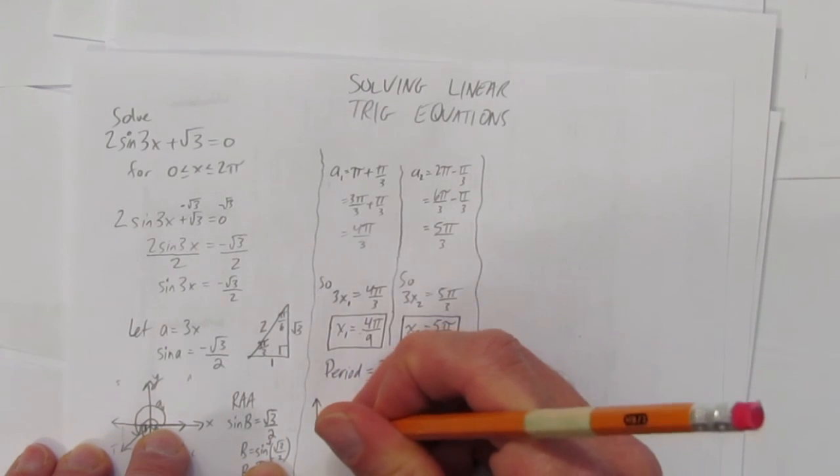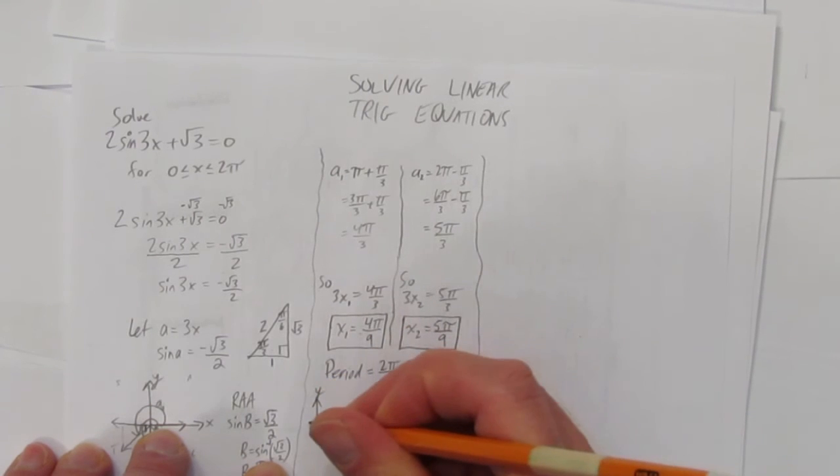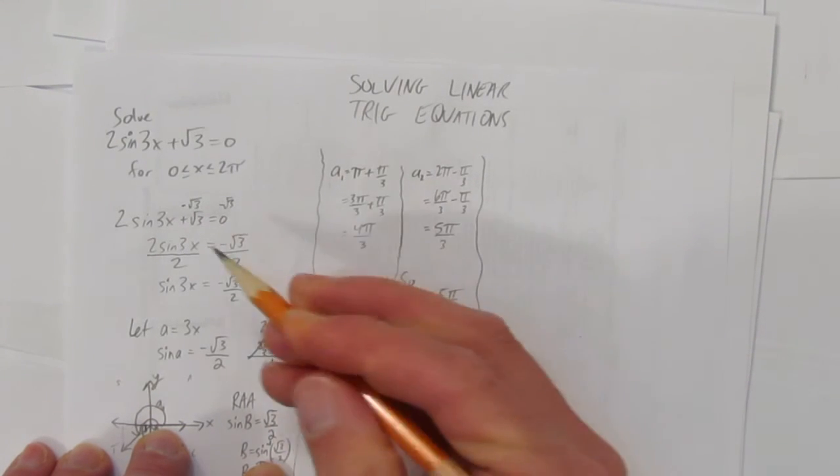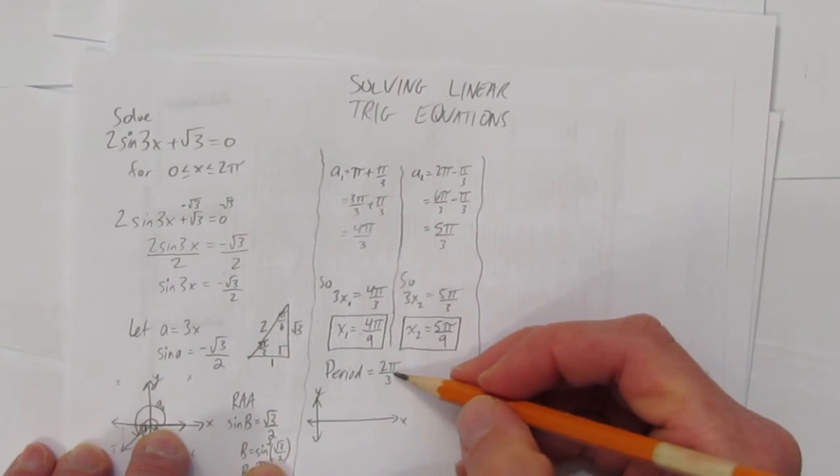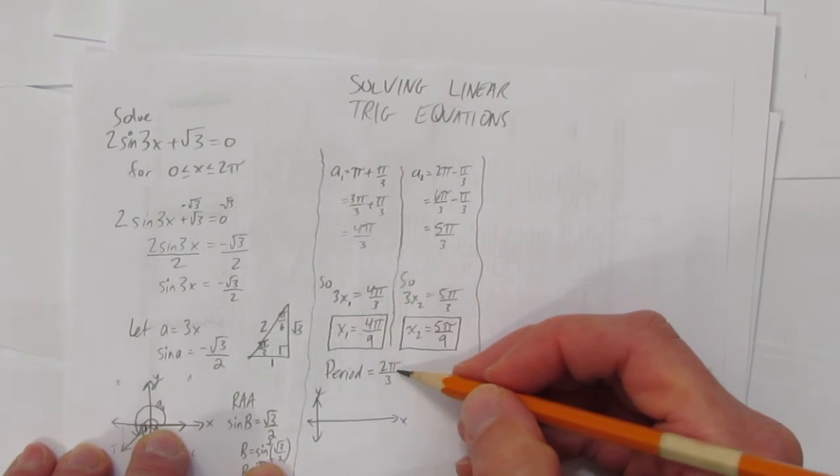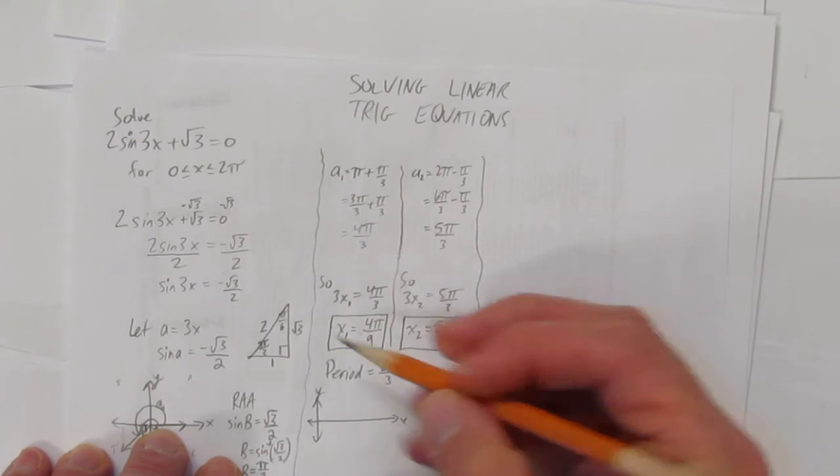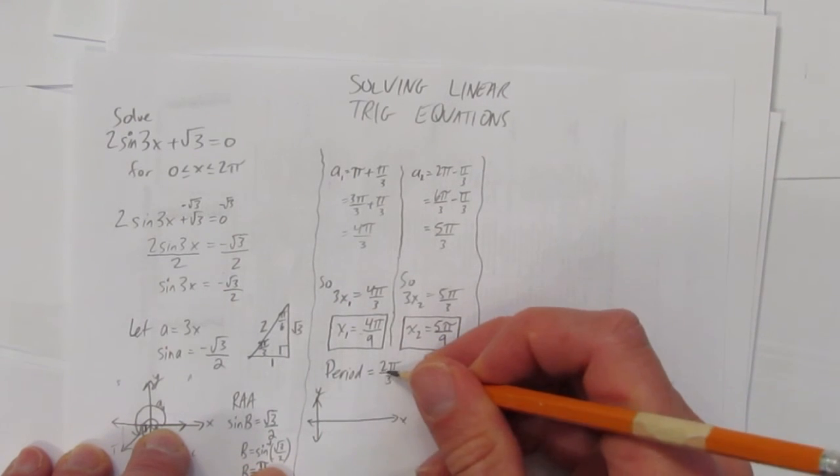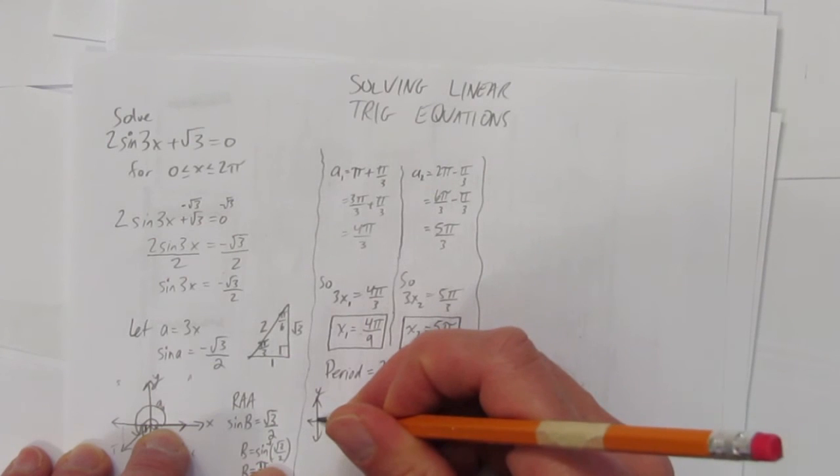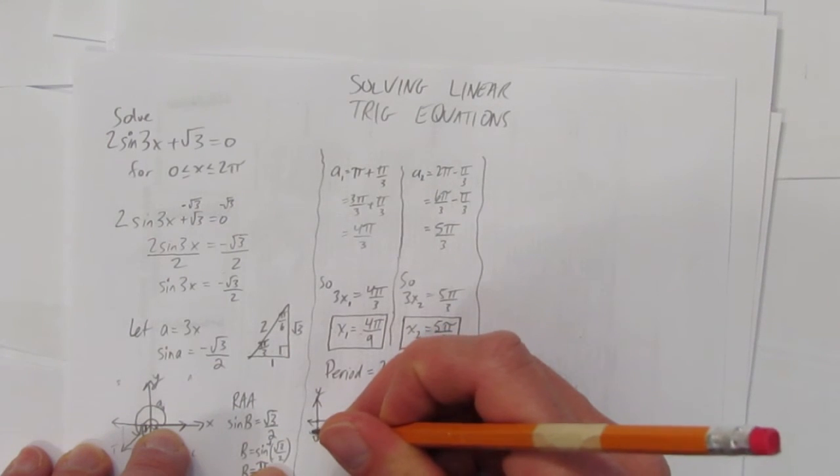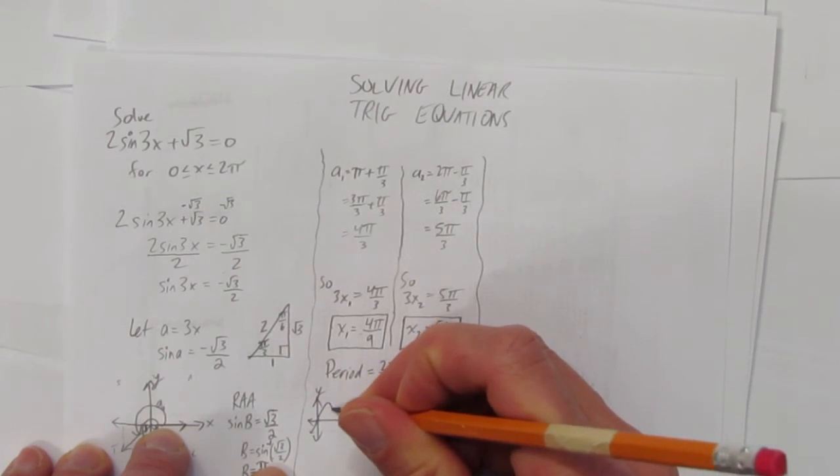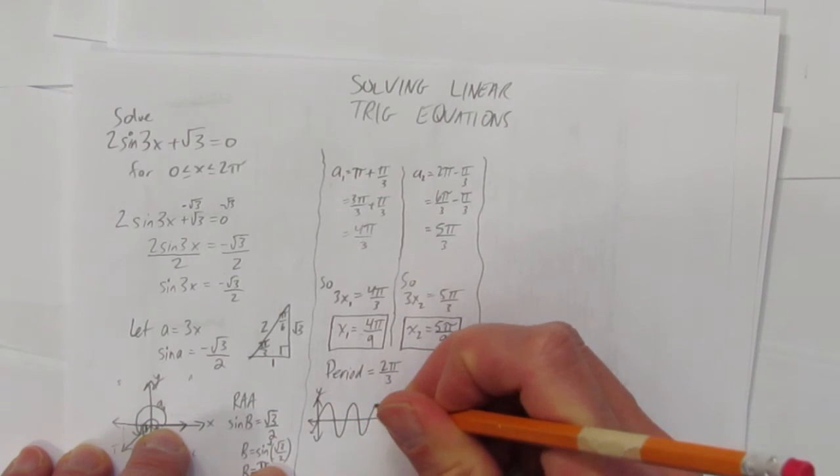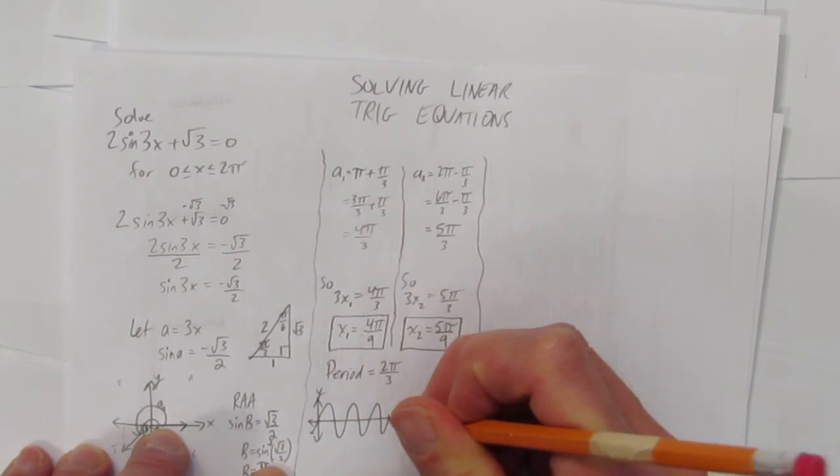I'll sketch out what that means. Here's a quick sketch. This is by no means a perfect scale, but there's a sine wave here that's been compressed. Instead of 2π, it's been compressed by a factor of a third. So its period, instead of doing one wave in 2π, it's going to start here, say, but then it's going to do a whole wave, and then another whole wave, and then a third whole wave by the time it gets to 2π.